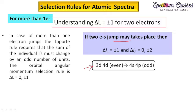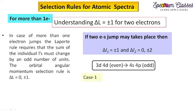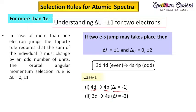Now I will explain with a hypothetical example: 3d, 4d, 4s, 4p. For d, L = 2, so these are even terms. For s, L = 0 (even), and for p, L = 1 (odd term). Case one: 4d can jump to 4p, giving ΔL = −1. Case two: 3d to 4s gives a change of −2, and combined we get −3, which is an odd number — so case two is also possible.